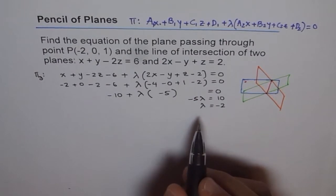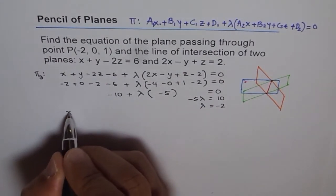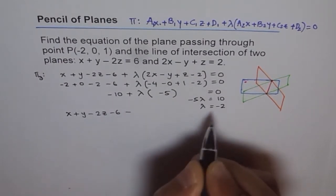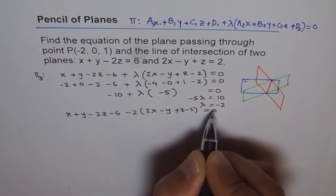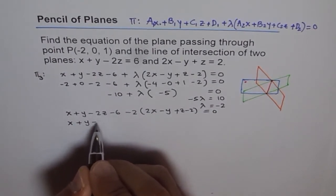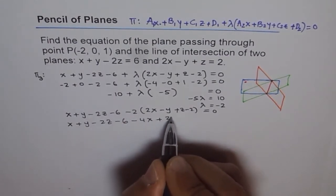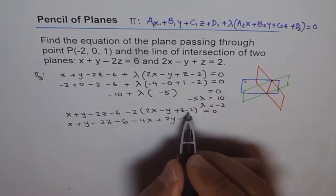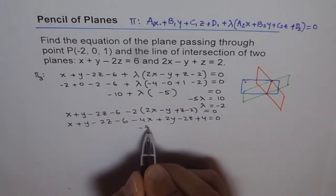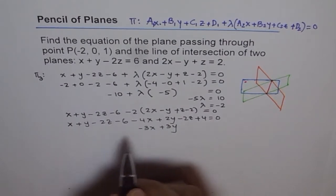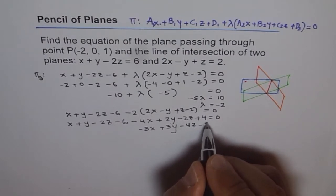Now we plug lambda = −2 into the equation. We get (x + y − 2z − 6) minus 2(2x − y + z − 2) = 0. Expanding: x + y − 2z − 6 − 4x + 2y − 2z + 4 = 0. Combining terms: −3x + 3y − 4z − 2 = 0. That is the equation of our plane.